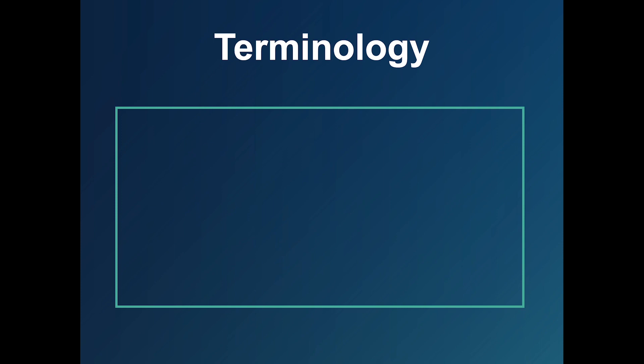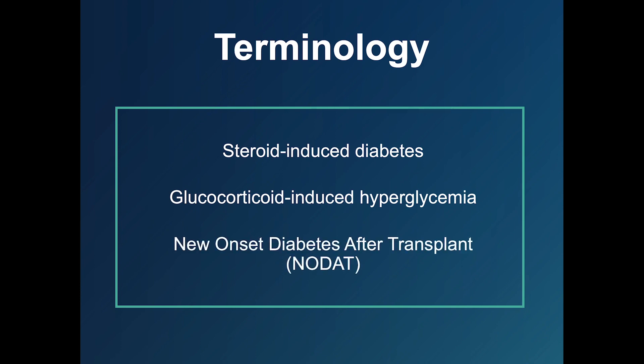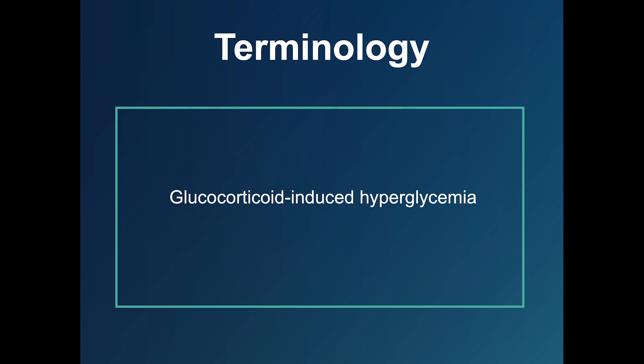There are several different terms people use to describe the hyperglycemia caused by glucocorticoids, including steroid-induced diabetes, glucocorticoid-induced hyperglycemia, and in the case of an organ transplant, new-onset diabetes after transplant. These terms are very similar — they all refer to the high blood sugars that people may develop after taking glucocorticoids, even those who do not have pre-existing diabetes. In this video, we will use the term glucocorticoid-induced hyperglycemia to refer to all instances of hyperglycemia caused by glucocorticoids.